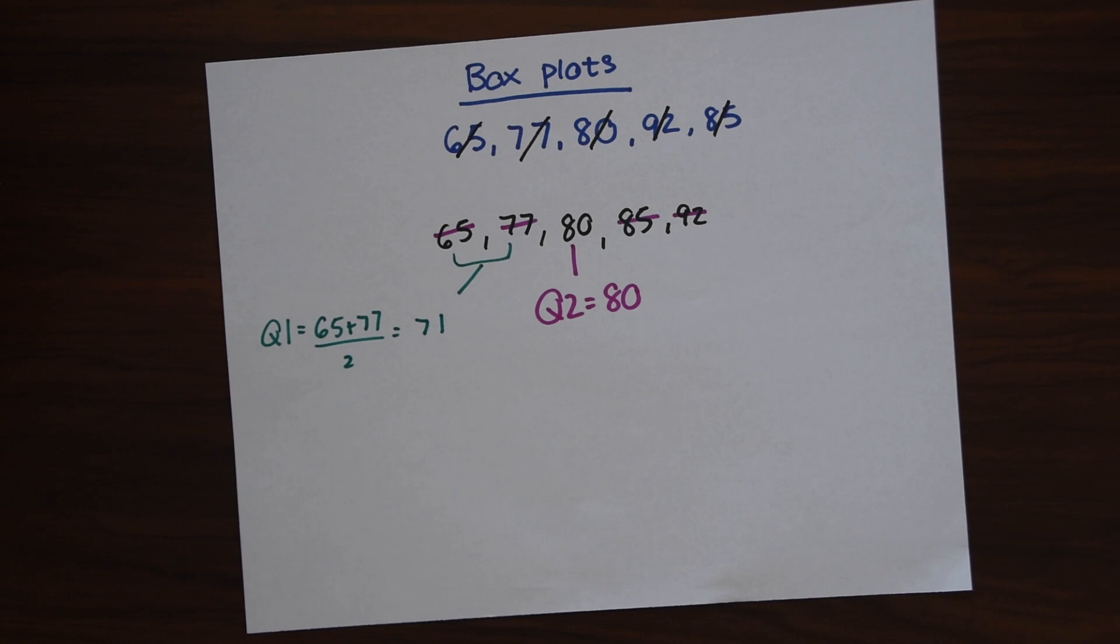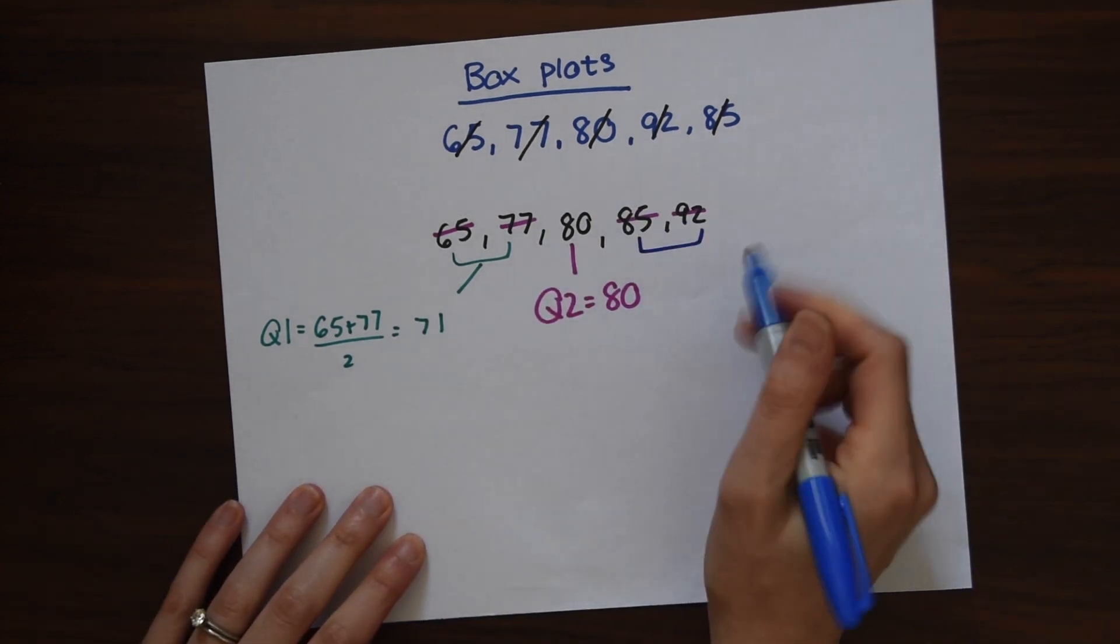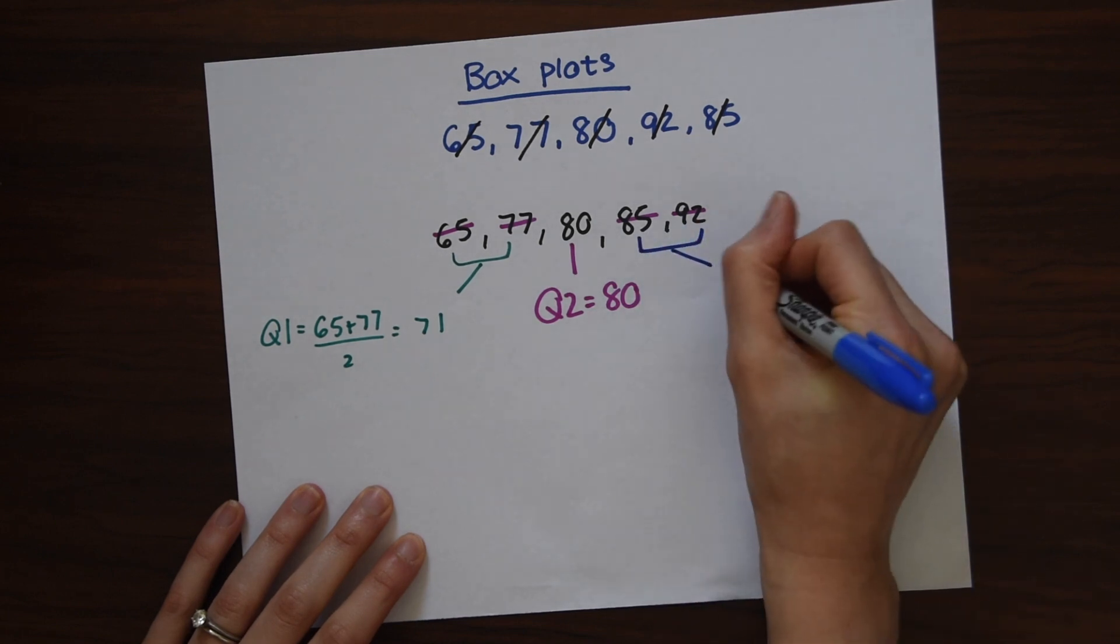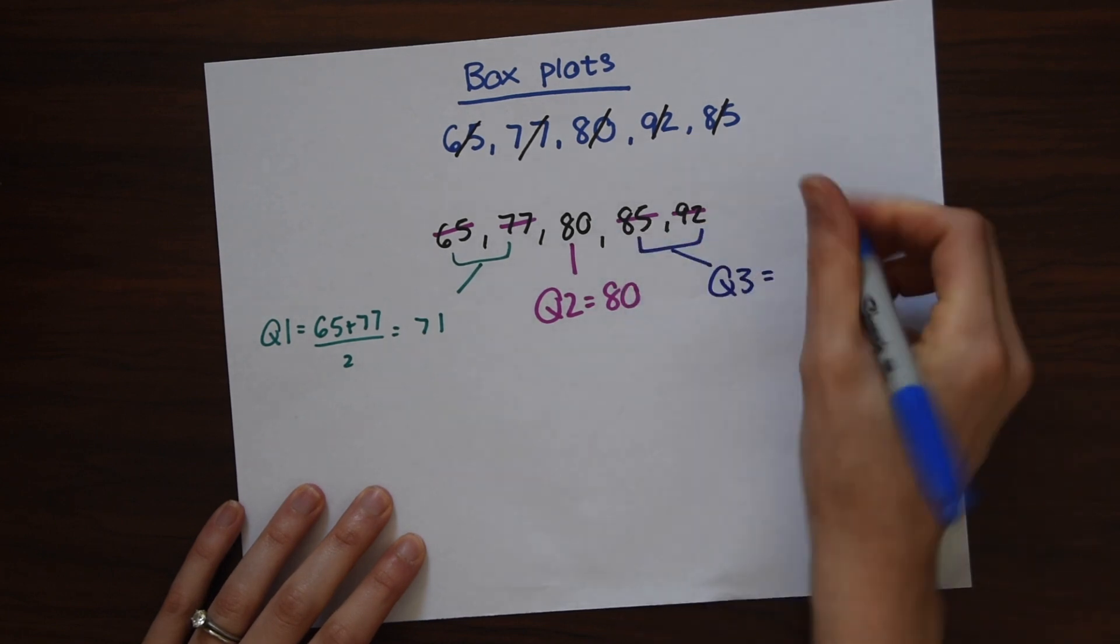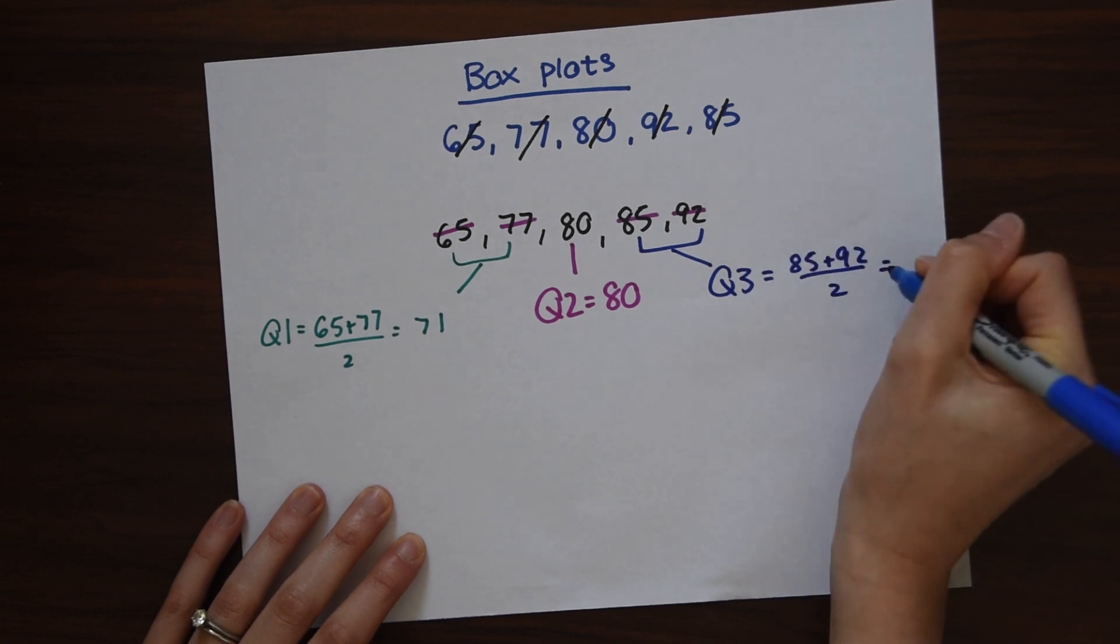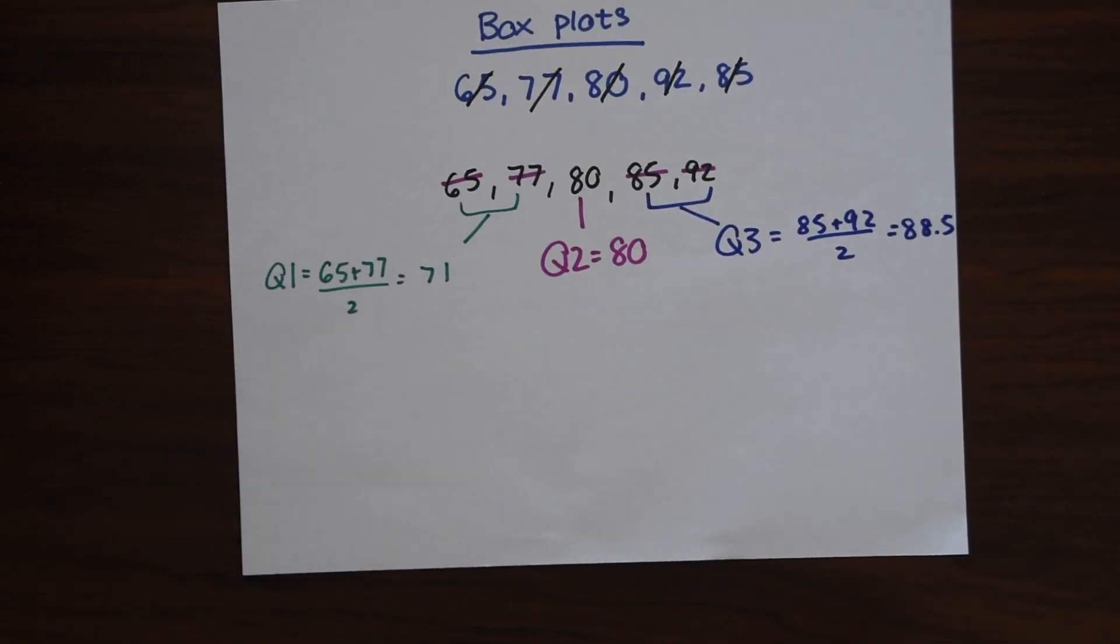And then we're going to do the same thing to find quartile 3 with the second half of the data. So again we're just going to find the average here. So quartile 3 is equal to 85 plus 92 divided by 2 which is 88.5. So now we actually have everything we need to make our box plot. We have quartile 1, quartile 2, and quartile 3.